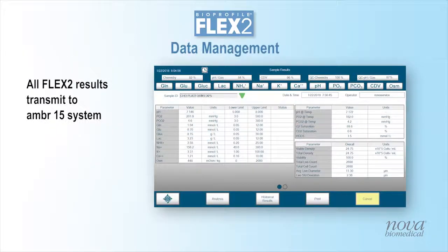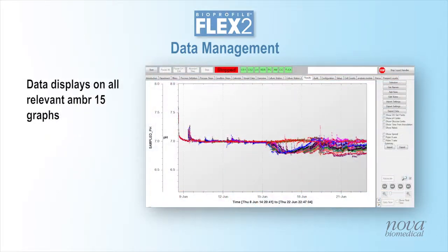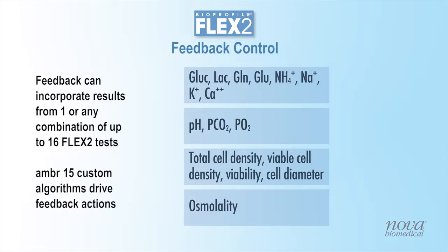When the analysis is completed, Flex2 immediately transmits all data to the AMBER15 software. Flex2 data is displayed on all relevant AMBER graphs. Algorithms utilizing one or any combination of up to 16 tests measured on Flex2 can be defined on the AMBER15 software for feedback control.